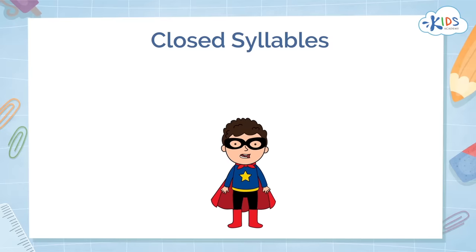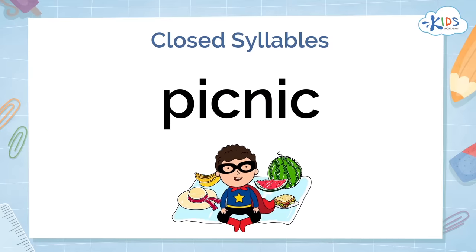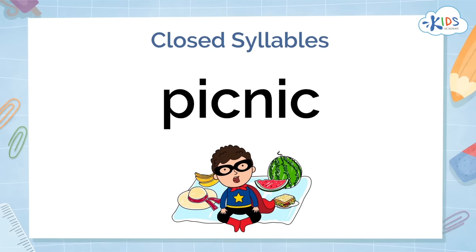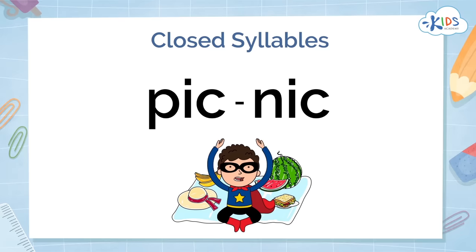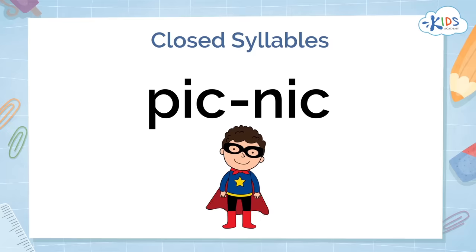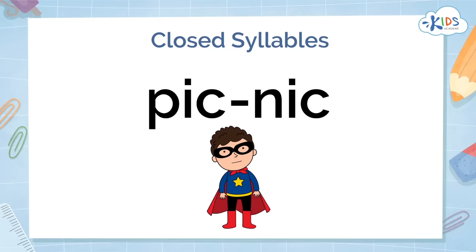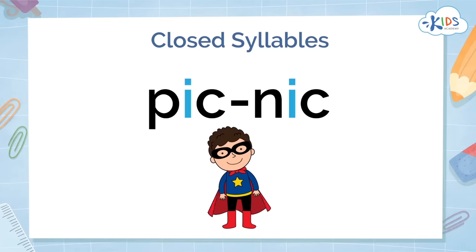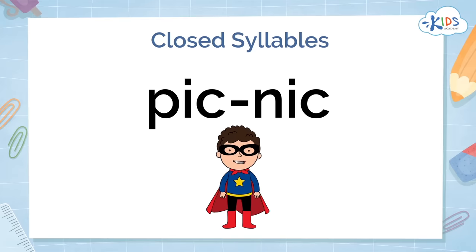Let's try another one. We can see that there are two vowels in this word, separated by two consonants. So there are probably two syllables. If I divide the two syllables — pick and nick — I can see that those are both closed syllables, and probably have short vowel sounds. Pick, nick.